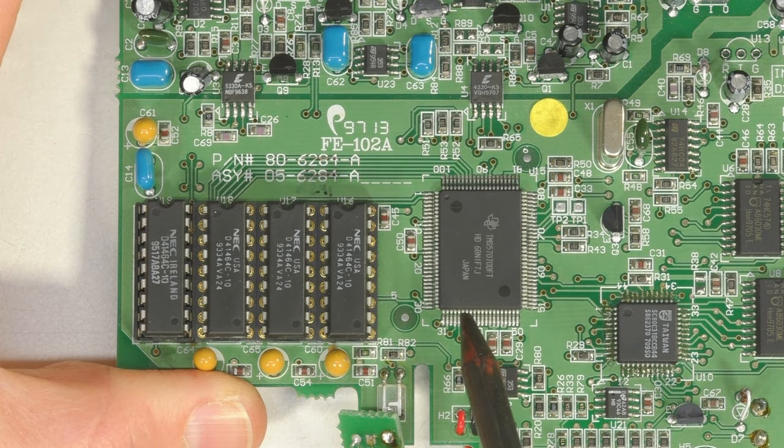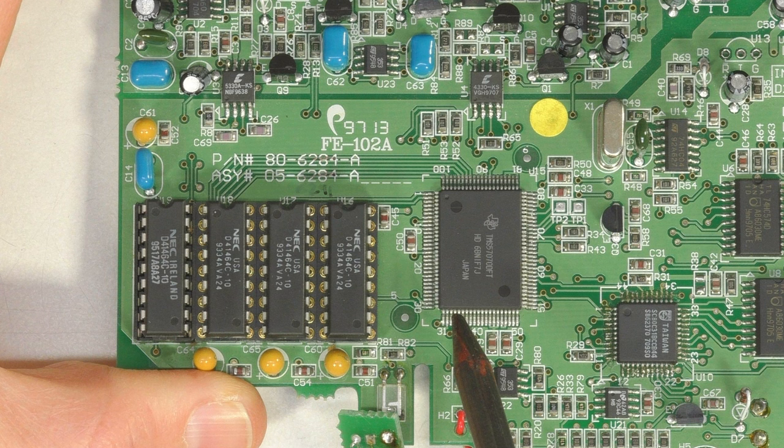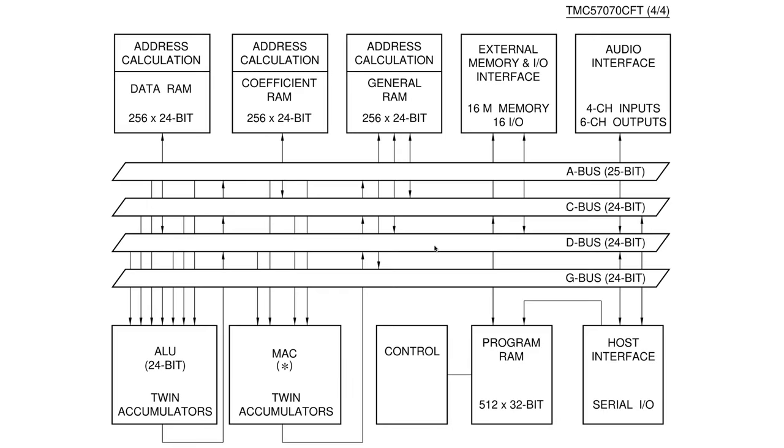Nearby is the Texas Instruments Digital Signal Processing, or DSP chip, the TMS57070. This does all the audio signal processing. There's virtually no official documentation on this chip. All I could find was a four-page document with some pinout and block diagrams.